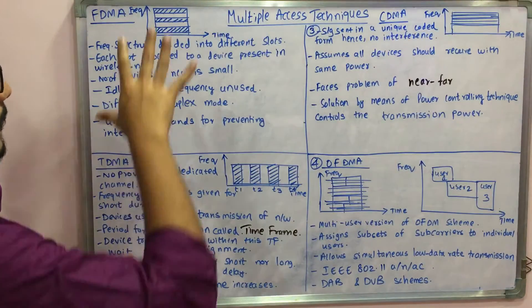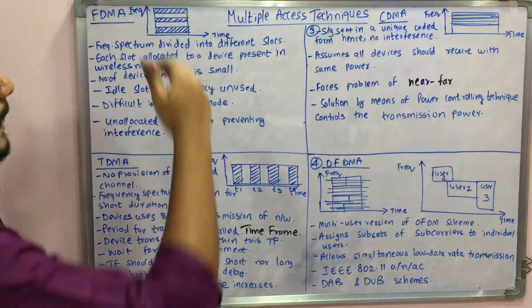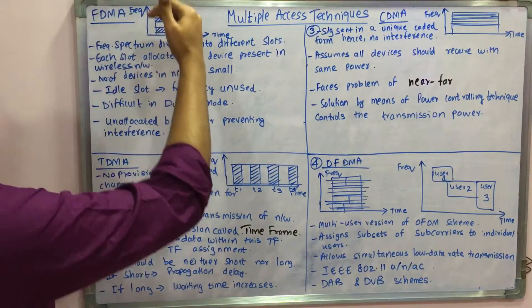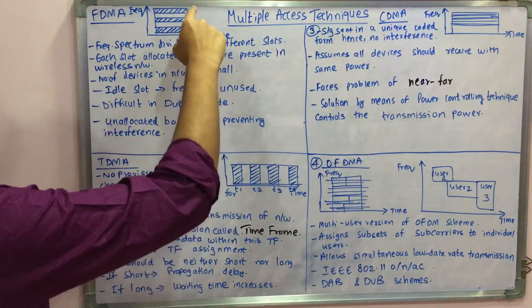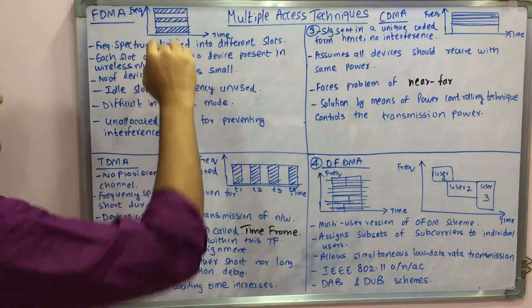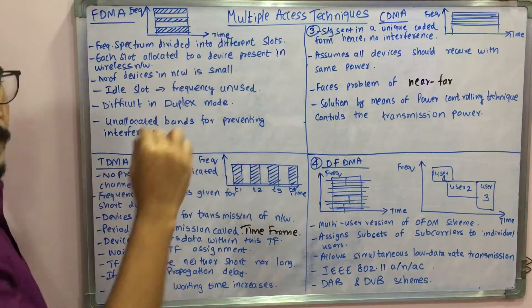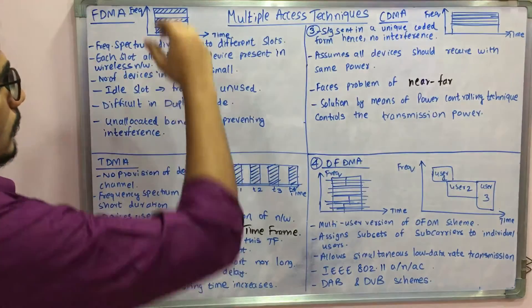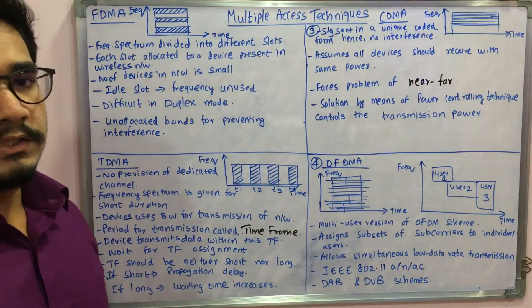You have the normal frequency band, and there is a division between each frequency. For example, if this is f1, f2, and f3, then a band should be kept unallocated so that no interference occurs. It's like there is a band wastage which goes, as we can see, in frequency division multiple access.